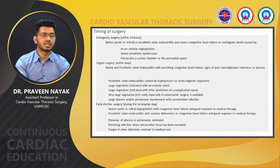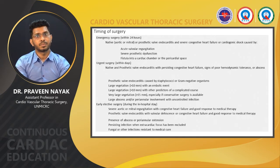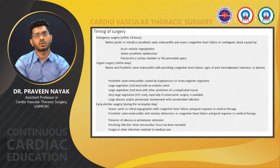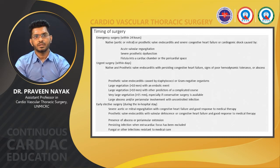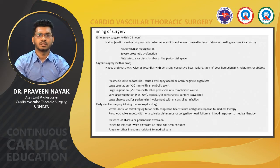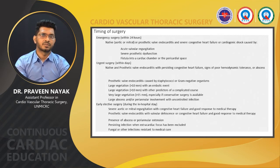Urgent surgery, performed within days, is indicated in patients with native or prosthetic valve endocarditis with persistent heart failure and signs of poor hemodynamic tolerance. Prosthetic valve endocarditis caused by staphylococcal or gram-negative infections is also an indication for urgent surgery. Additional urgent surgery indications include large vegetations more than 10 mm with embolic events, large vegetations more than 10 mm with other predictors of complicated course, and very large vegetations more than 15 mm especially if conservative valve-preserving surgery is available.